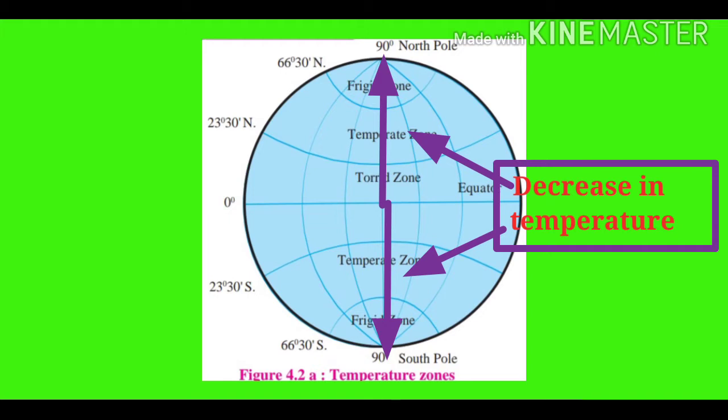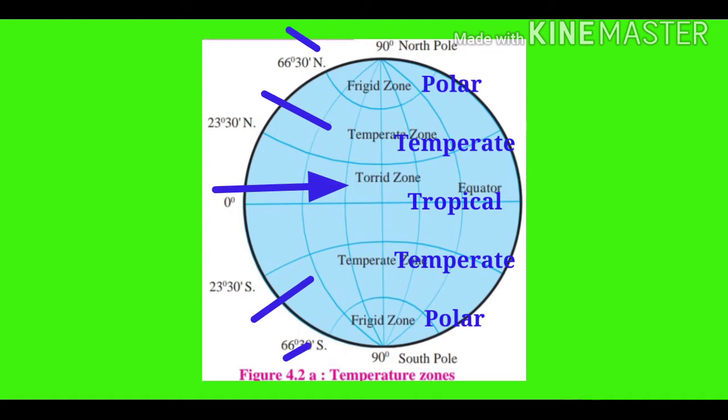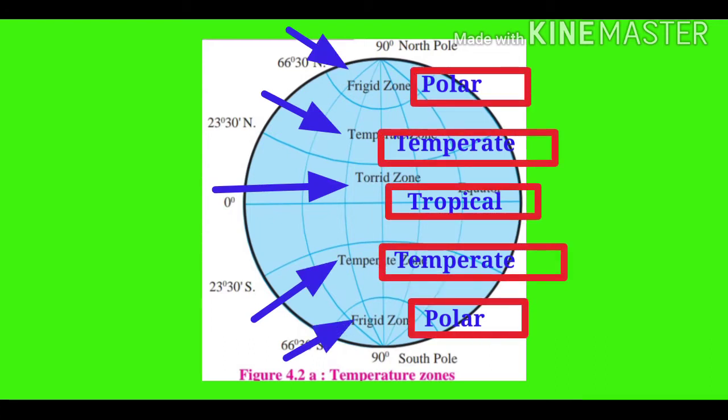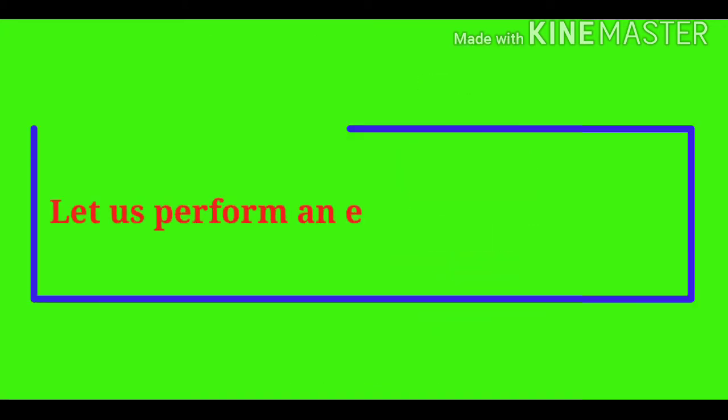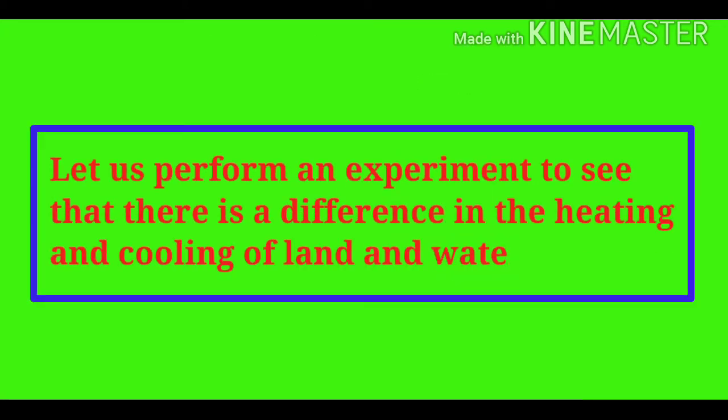Based on the distribution of temperature, the earth can be divided into torrid, temperate, and frigid zones, or tropical, temperate, and polar regions.